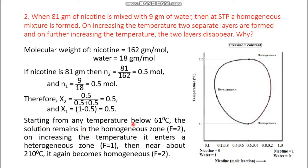Starting from any temperature below 61°C, the solution remains in the homogeneous zone with degree of freedom = 2. On increasing the temperature it enters the heterogeneous zone with degree of freedom = 1. Near about 210°C, at the 0.59 mole fraction point, it again becomes homogeneous with degree of freedom = 2.